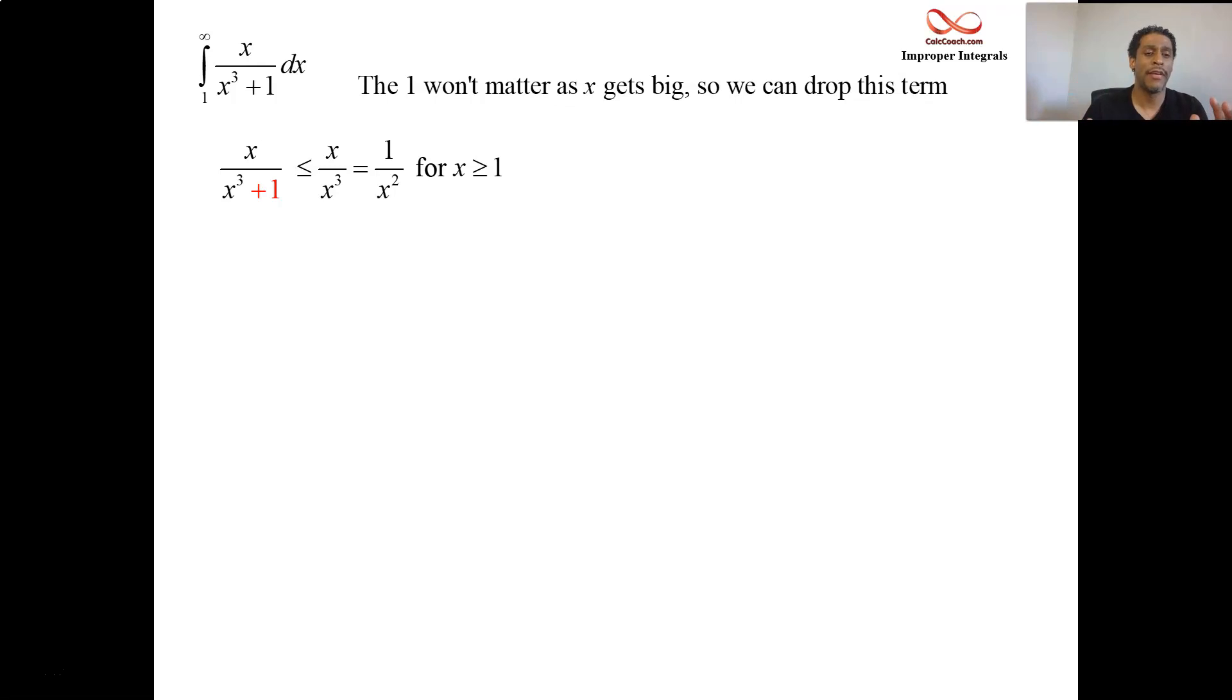By dropping that off, we'll have something that is bigger. Why is the thing that we have bigger? Well, the one that we're given has the plus one. Everything else is exactly matching. Bigger denominator leaves you to be a smaller fraction. So the one that we're given is smaller. The one that we got by dropping off is bigger. It simplifies to be one over x squared. And it will be the case as long as x is bigger than one. And that's what we care about, x being bigger than one.